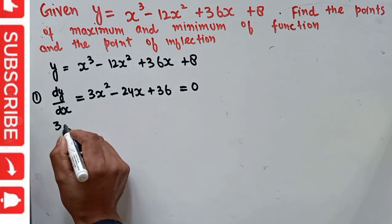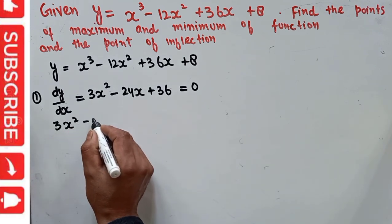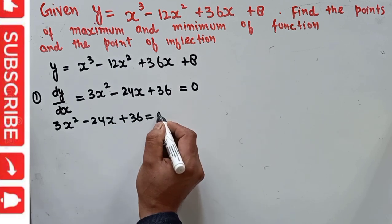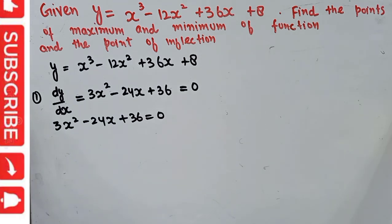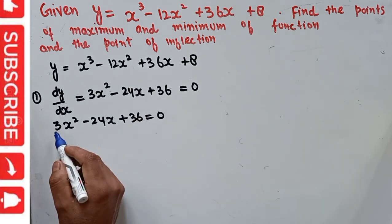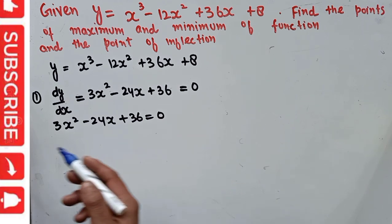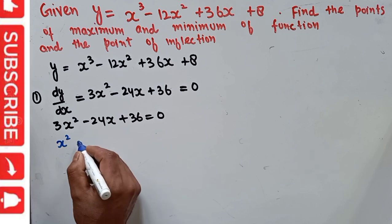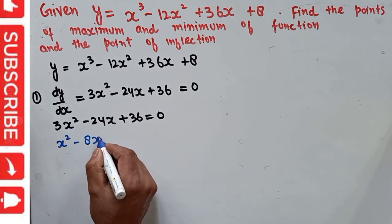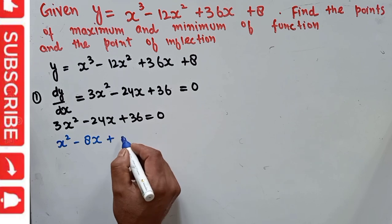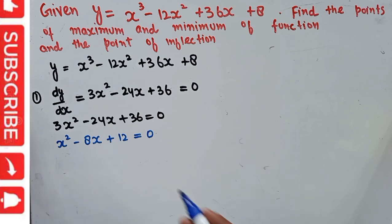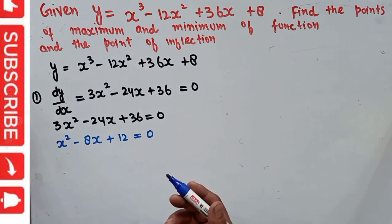This gives us 3x² - 24x + 36 = 0. Since 3, 24, and 36 are all divisible by 3, let's divide both sides by 3. We get x² - 8x + 12 = 0. This is a quadratic and we can solve it by splitting the middle term.